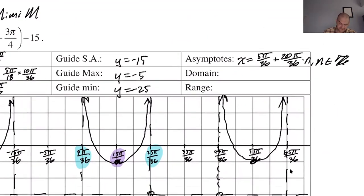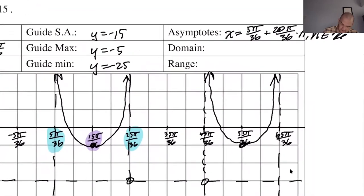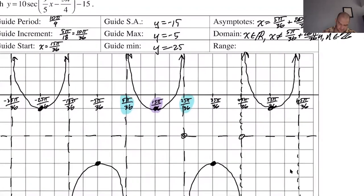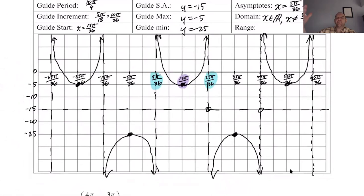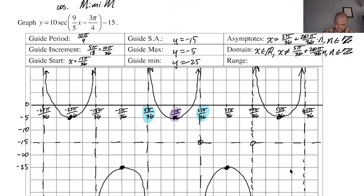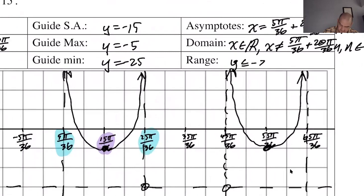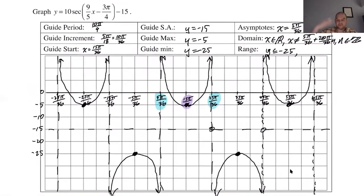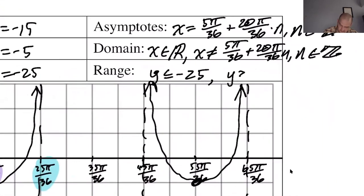And then how far apart are they? They are 20π over 36 apart times n, where n is an element of the integers. Very impressed if anyone can get that all in that box. I cannot. Which means I should probably give you more space, but I'm also probably not going to do that. So domain is all reals except the asymptotes. So x can't be 5π over 36 plus 20π over 36 times n. And the range is like the complement of the range of the guide function. The guide function is stuck between negative 25 and negative 5. This function is going to be like everything else. So you can go negative infinity until you get to negative 25, which I'm going to say is y is less than or equal to negative 25. And then you can go from negative 5 up to infinity. So I'm just going to say y is greater than or equal to negative 5.